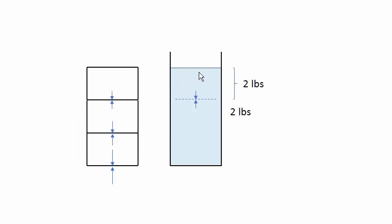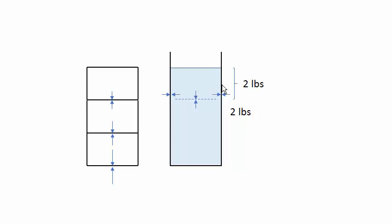This block of water weighs two pounds and exerts a force of two pounds downward on the water below it, and the water below has a counterbalancing force upward. The forces are balanced throughout the water. The water also exerts a sideways force on the walls of the container outward, and the wall exerts a counterbalancing force against the water.